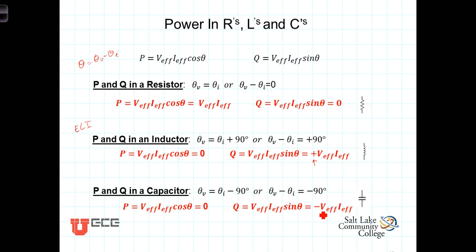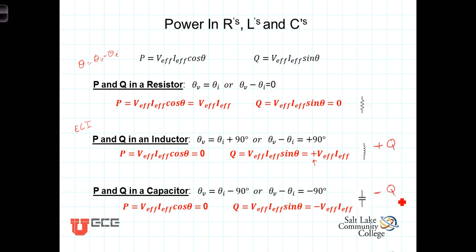For a capacitor, the angle between voltage and current is negative 90 degrees. The cosine of negative 90 degrees is zero, so the average power in a capacitor is also zero. The sine of negative 90 degrees is negative one, so Q in a capacitor equals negative V effective times I effective. Thus, an inductor has positive reactive power and a capacitor has negative reactive power, while both have zero average power.